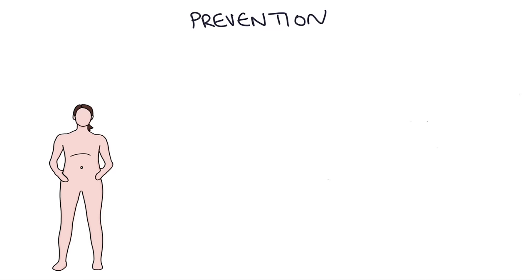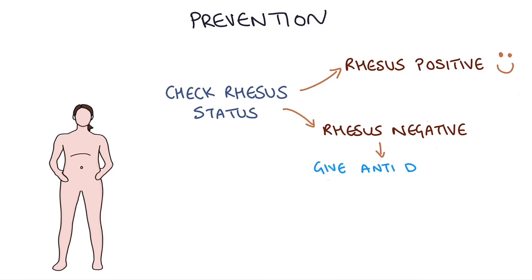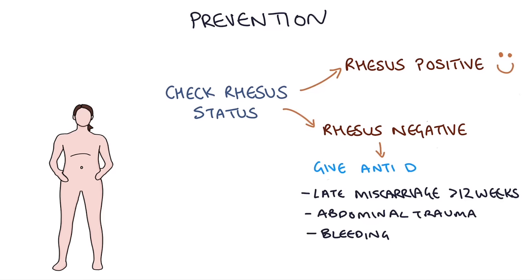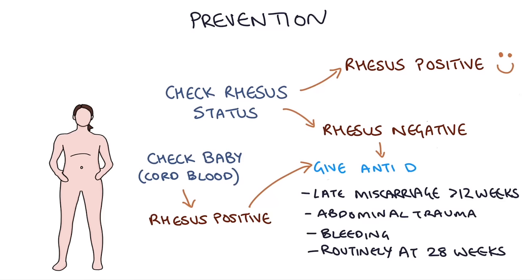In practice, we check the rhesus status of every pregnant lady. If she's rhesus positive, we don't have to worry about rhesus incompatibility at all. But if she's rhesus negative, we assume the baby could be rhesus positive and give her an anti-D immunoglobulin intramuscular injection at any sensitizing event — such as late miscarriages after 12 weeks, abdominal trauma, or any bleeding during pregnancy. We also give anti-D injections routinely at 28 weeks of gestation. At birth, we check the baby's blood group from an umbilical cord sample and give the mum an anti-D injection if the baby is rhesus positive. If the baby is rhesus negative, no injection is needed.